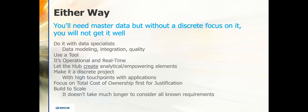Focus on the total cost of ownership first for justification. About 90% of the time I end up with a total cost of ownership play — it's going to cost you less. You're going to do this anyway, so you might as well do it once, do it right, build it to scale, create data as a service, and you de-risk and de-scope applications. You can get things to market a lot quicker, which obviously brings some ROI.